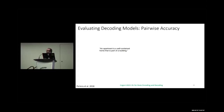One standard evaluation metric for decoder models is pairwise accuracy. The 2V2 and pairwise metrics are almost similar — the only difference is that 2V2 uses cosine distance whereas pairwise accuracy uses correlation.